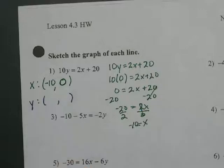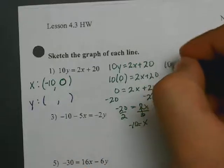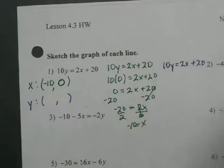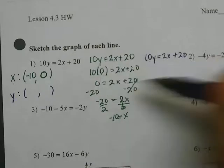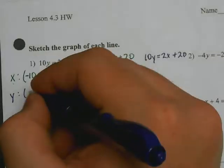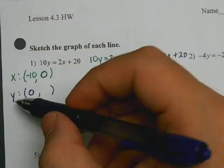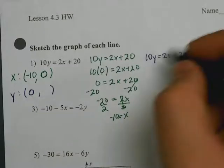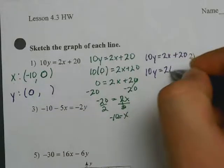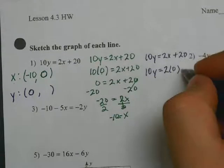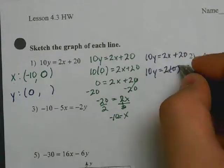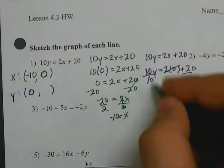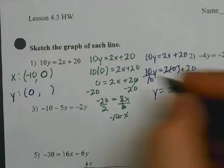Now for the y intercept, you rewrite the problem: 10y equals 2x plus 20. Instead of substituting 0 for y, we're going to substitute 0 for x, because when a line intersects the y axis the x coordinate is 0. So 10y equals 2 times 0 plus 20 — that cancels, leaving me with 10y equals 20. Divide both sides by 10, and you get y equals 2, so the y intercept is 0 comma 2.